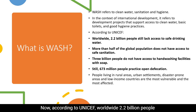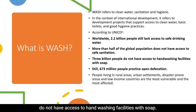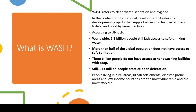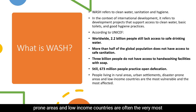According to UNICEF, worldwide 2.2 billion people still lack access to safe drinking water. More than half of the global population does not have access to safe sanitation, and 3 billion people around the world do not have access to hand-washing facilities with soap. Still, some 673 million people practice open defecation. People living in rural areas, urban settlements, disaster-prone areas, and low-income countries are often the most vulnerable and the most affected by inaccessible WASH.